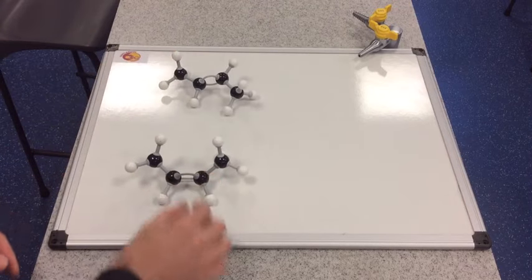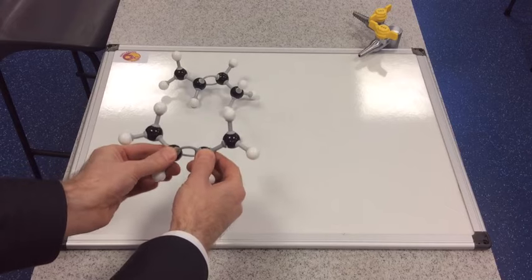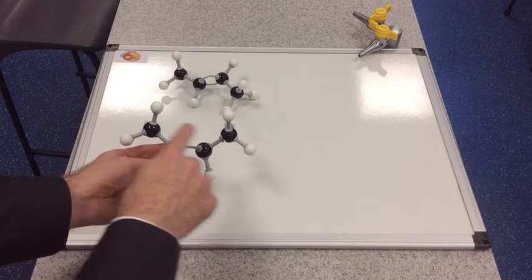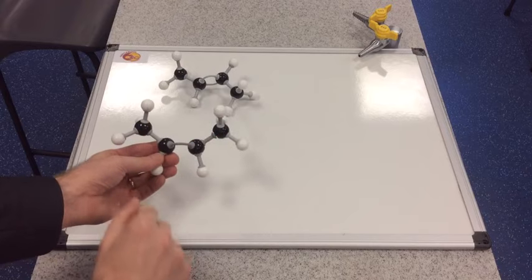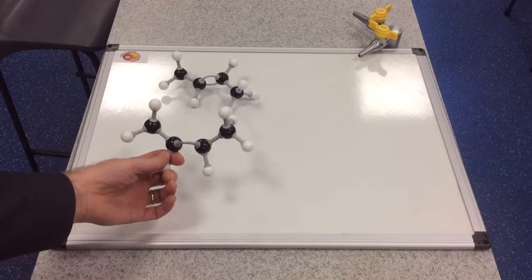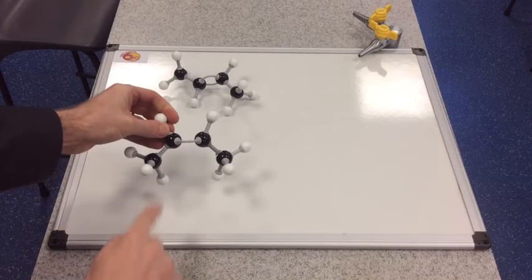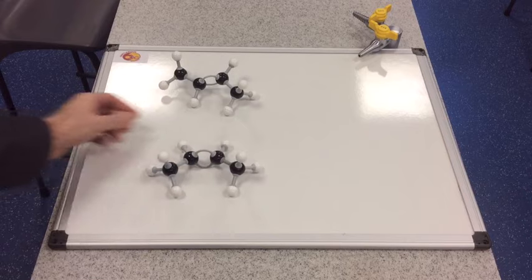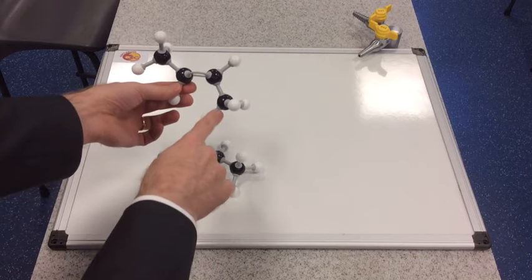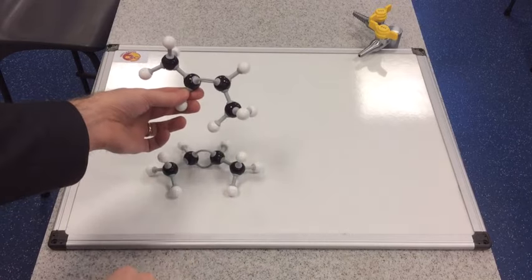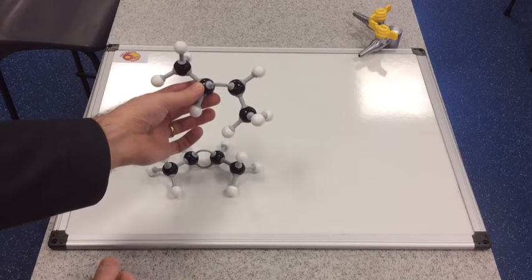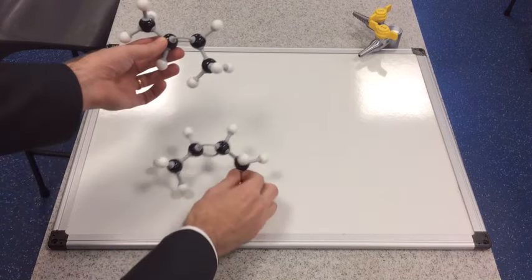You can see that this carbon-carbon double bond prevents any rotation. So in this version, you've got both methyl groups pointing up or pointing down — they are together on the same side of the carbon-carbon double bond. Whereas in this isomer, I've got this methyl group pointing down and this methyl group pointing up. The carbon-carbon double bond prevents any rotation, and so that's what makes these molecules different.